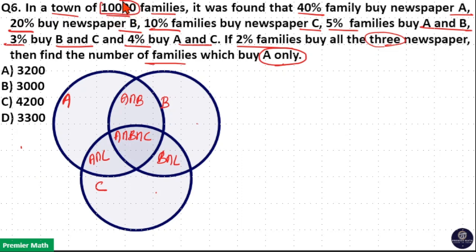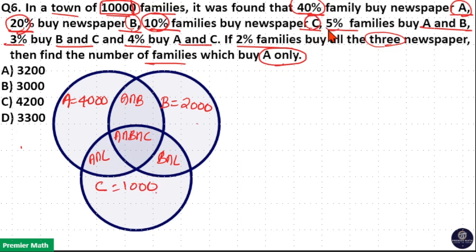There are total 10,000 families. 40% of families buy newspaper A means 40% of 10,000 is 4,000. 20% buy newspaper B means 2,000. 10% buy newspaper C means 1,000. 5% buy A and B, so A intersection B is 500. 4% buy A and C means 400. 2% buy all three newspapers, so the tri-junction is 200.